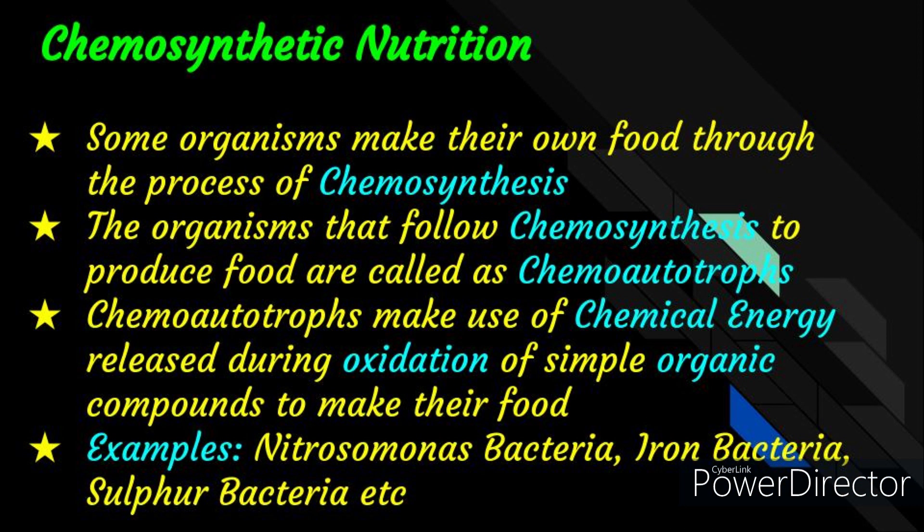Now let us learn about the second type of autotrophic nutrition, that is chemosynthetic nutrition. Some organisms make their own food through the process of chemosynthesis. The organisms that follow chemosynthesis to produce food are called chemo-autotrophs. Chemo-autotrophs make use of chemical energy released during oxidation of simple inorganic compounds to make their food. Examples of chemosynthetic nutrition include Nitrosomonas bacteria, iron bacteria, sulfur bacteria, etc.